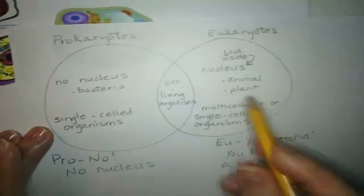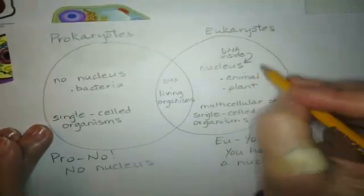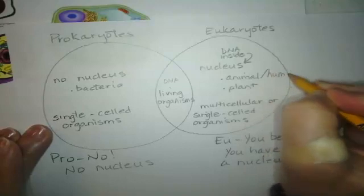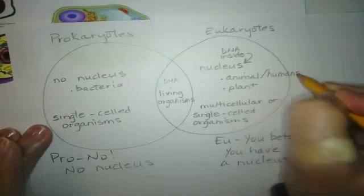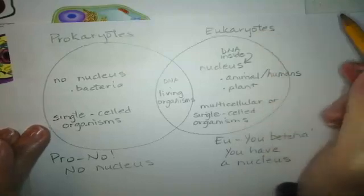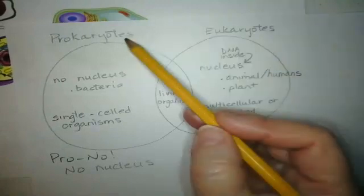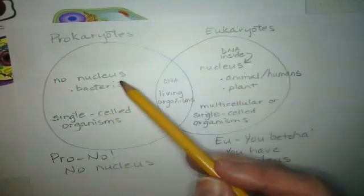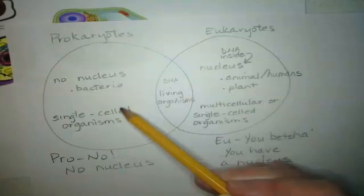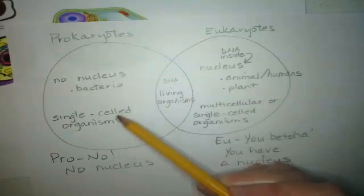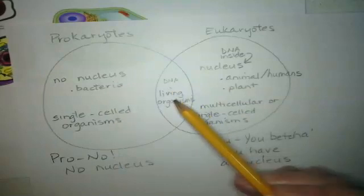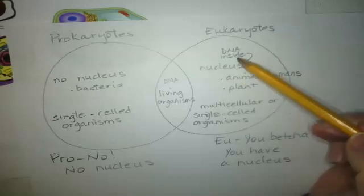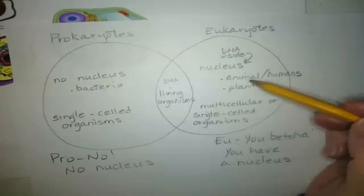Because 'you' — humans over here, we should put that for animals too — we'll put animal and humans, because you are an animal. And humans are eukaryotes. Prokaryotes: pro-no, no nucleus. So there's no nucleus. Example: bacteria. They are single-celled organisms, they do have DNA, and they are living organisms.